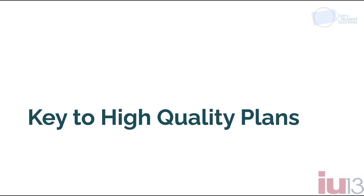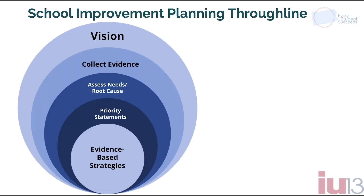In general, there is a key to high quality plans that you want to keep in mind as you review each phase of the plan. Very few plans have an impact on students if there isn't a clear through line. The work starts with a clearly developed vision for learning that stakeholders agree upon. That vision helped teams to know what evidence to collect — what evidence would let them understand their current status. Once the evidence is collected, it's time for assessing the needs and exploring root causes. That's the focus of the video today.